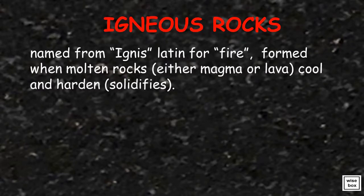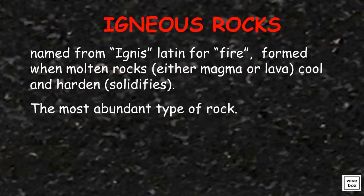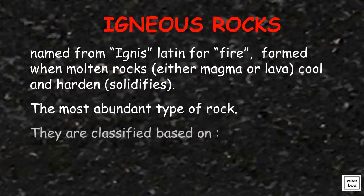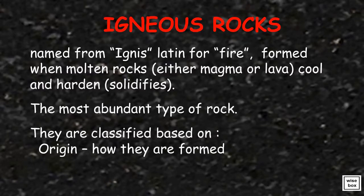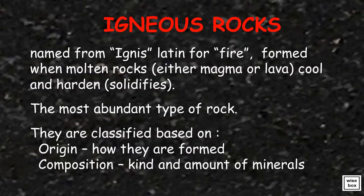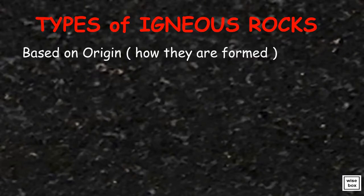Igneous rocks are named for 'ignus,' Latin for fire, and are formed when molten rocks — either magma or lava — cool and harden, or solidify. They are the most abundant type of rock. Igneous rocks may also be categorized and classified based on origin, which is how they are formed, and composition, which depends on the kind and amount of minerals they contain.